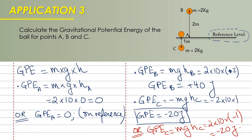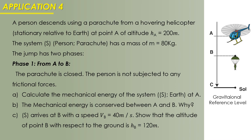Application four is more like a full problem. A person descends using a parachute from a hovering helicopter at point A, at altitude hA = 200 meters. The system (person + parachute) has a mass of 80 kilograms. Phase one is from A to B with the parachute closed and no frictional force. Calculate the mechanical energy at A, then state why mechanical energy is conserved between A and B. The person arrives at B with a speed of 40 meters per second.